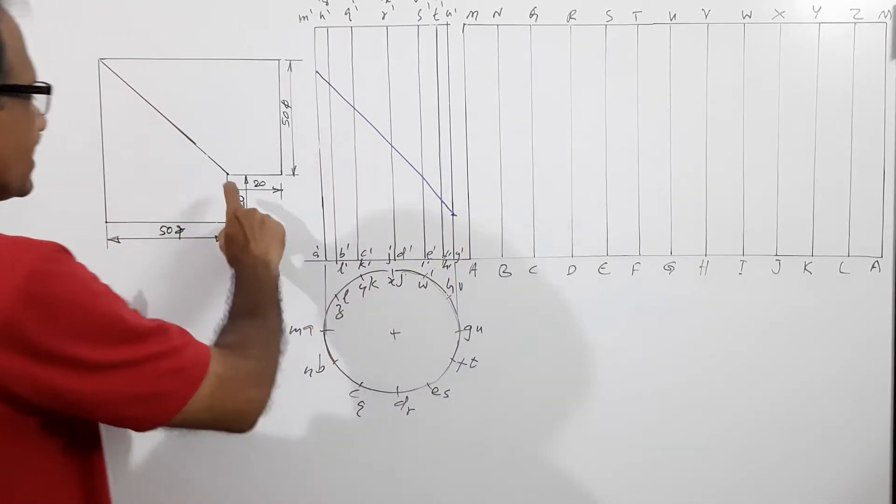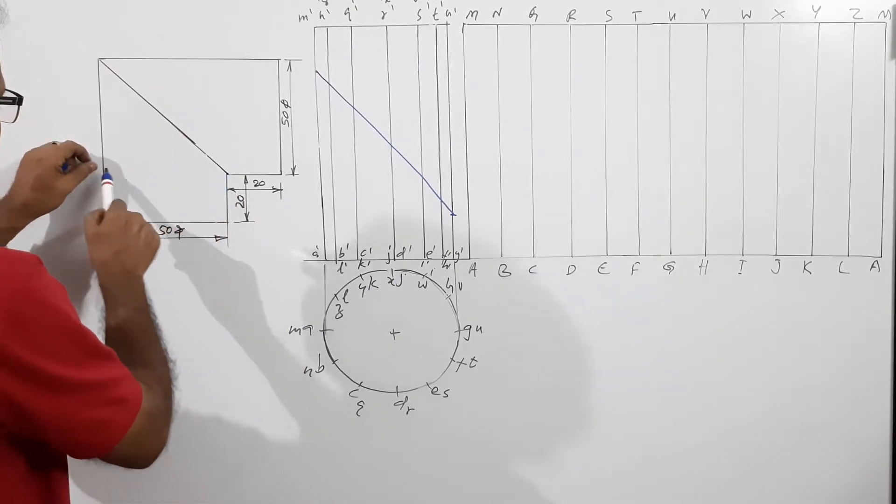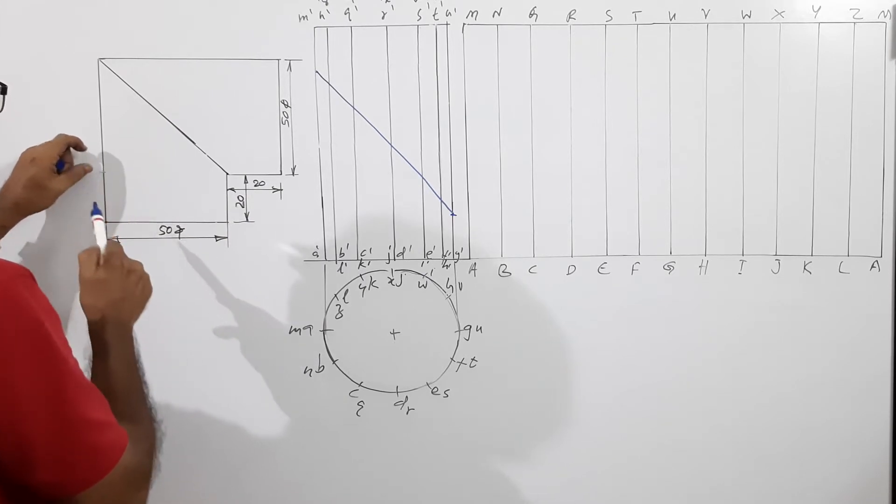How much is the height? This is 20. This is 20. Up to this is 20. What is this?